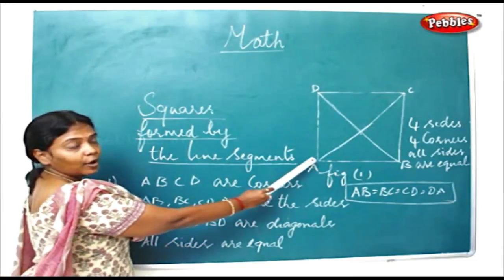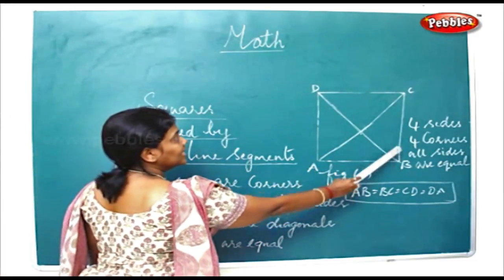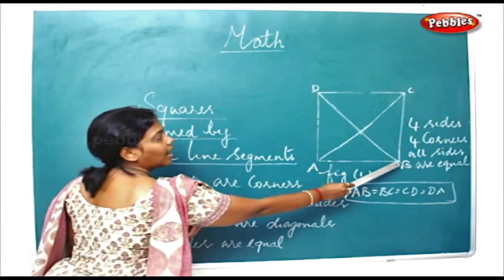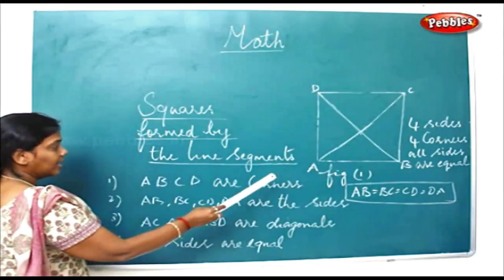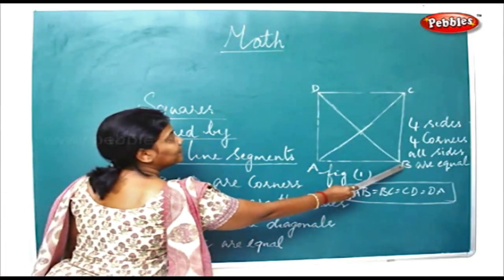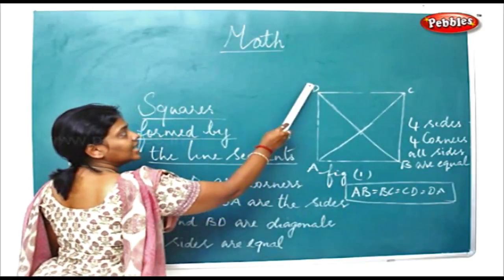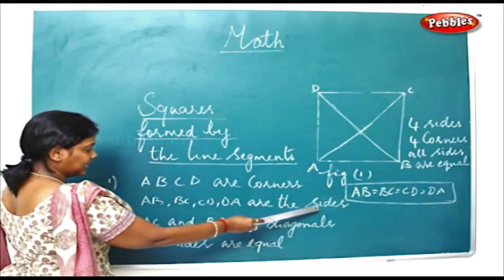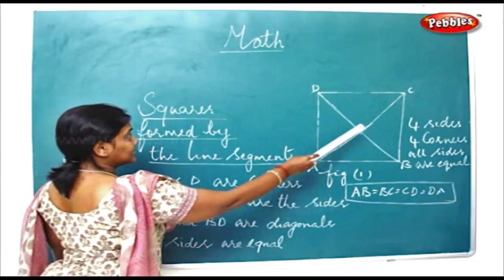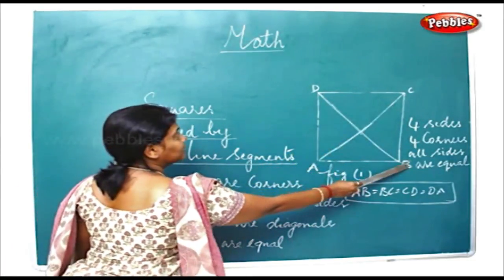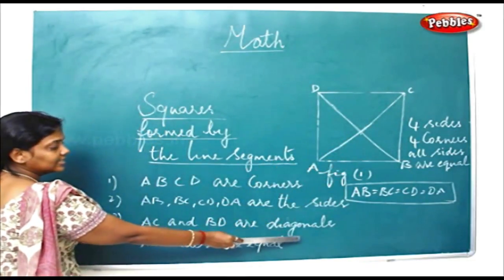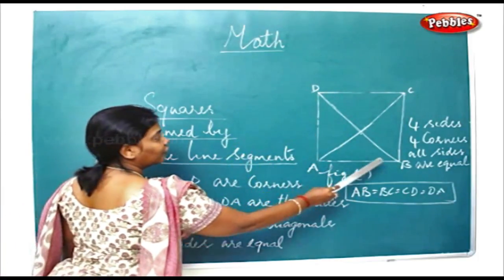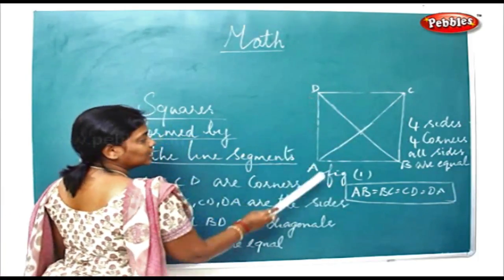Here in the above figure, A, B, C, D are the corners. A-B, B-C, C-D, and D-A are the sides. A-C and B-D are called the diagonals. You can see all 4 sides are equal.